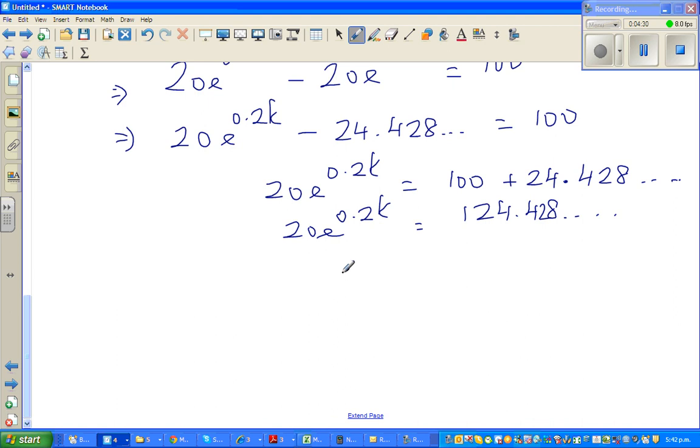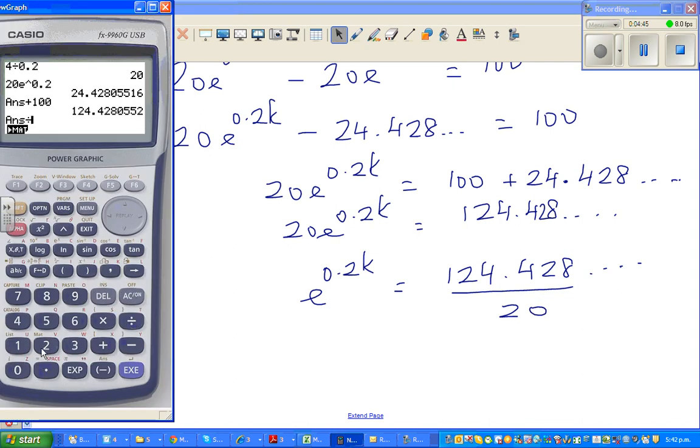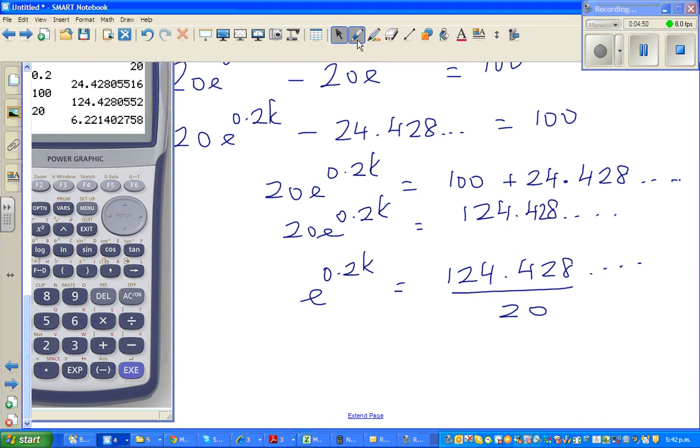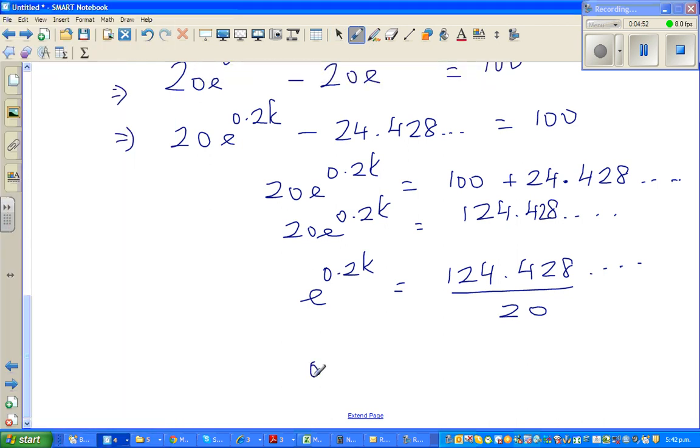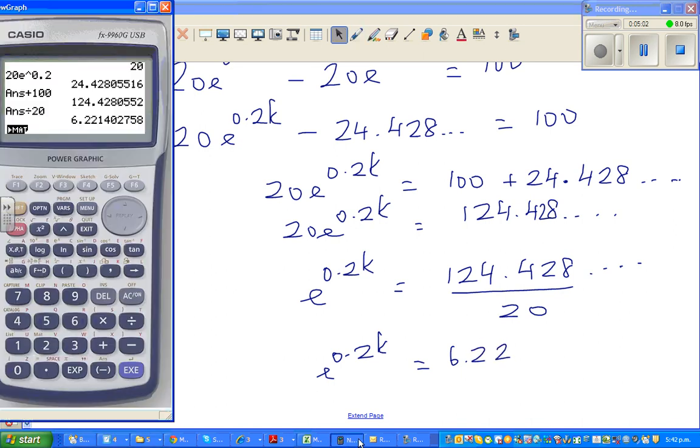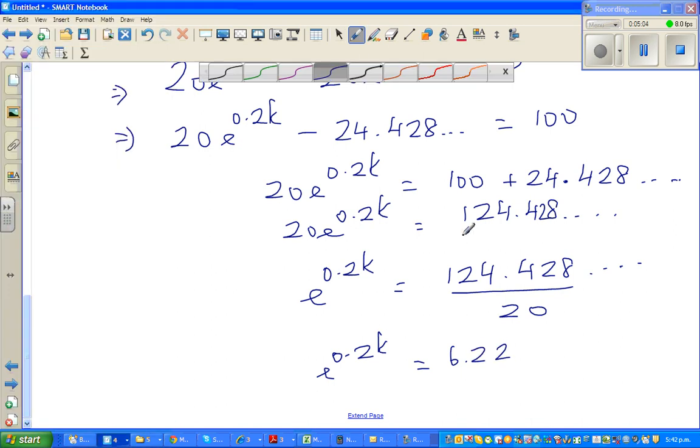So now dividing both sides by 20, e to the power 0.2k is 124.428 divided by 20. So e to the power 0.2k will give me 6.2214, so e to the power 0.2k is 6.2214 dot dot.